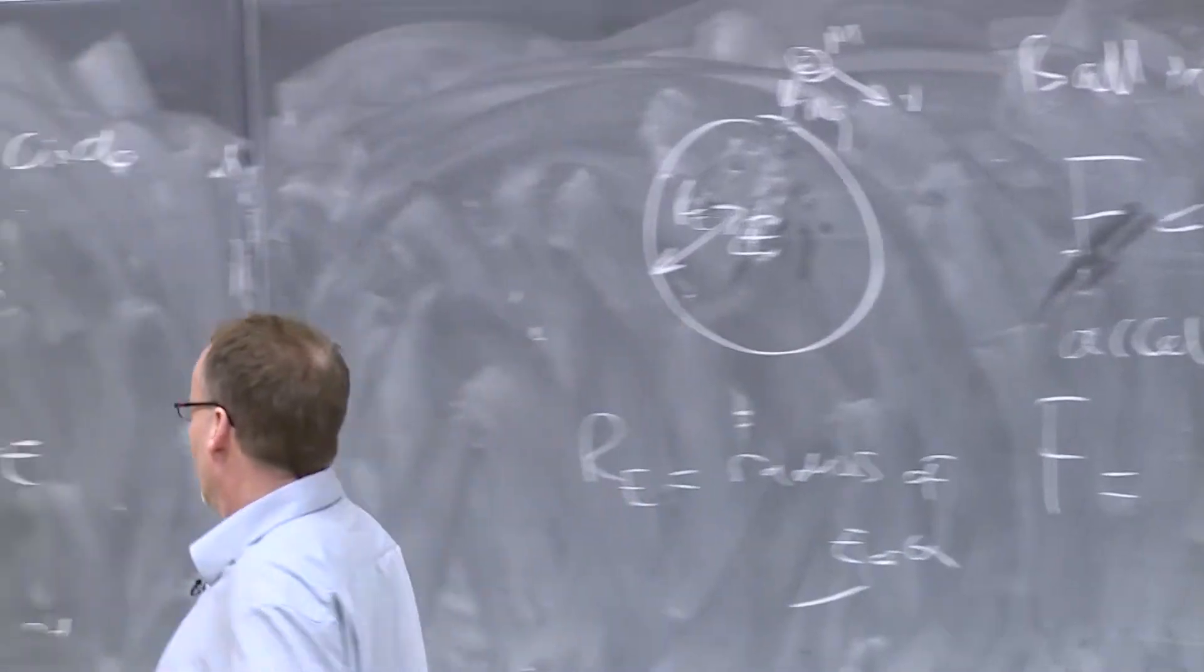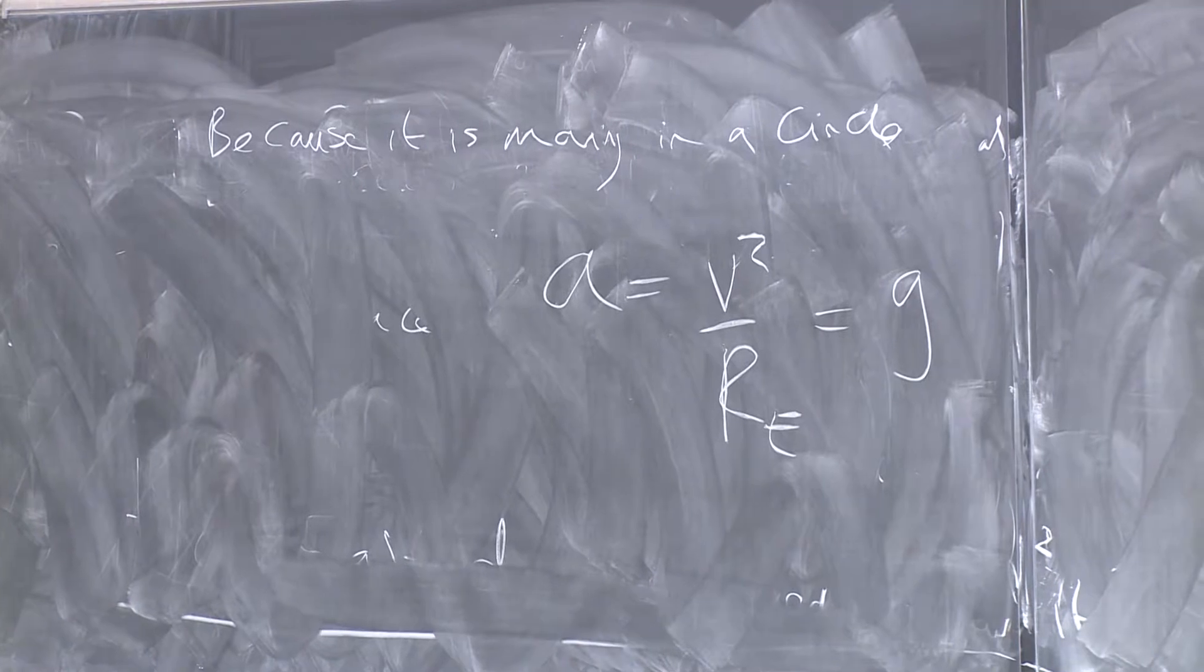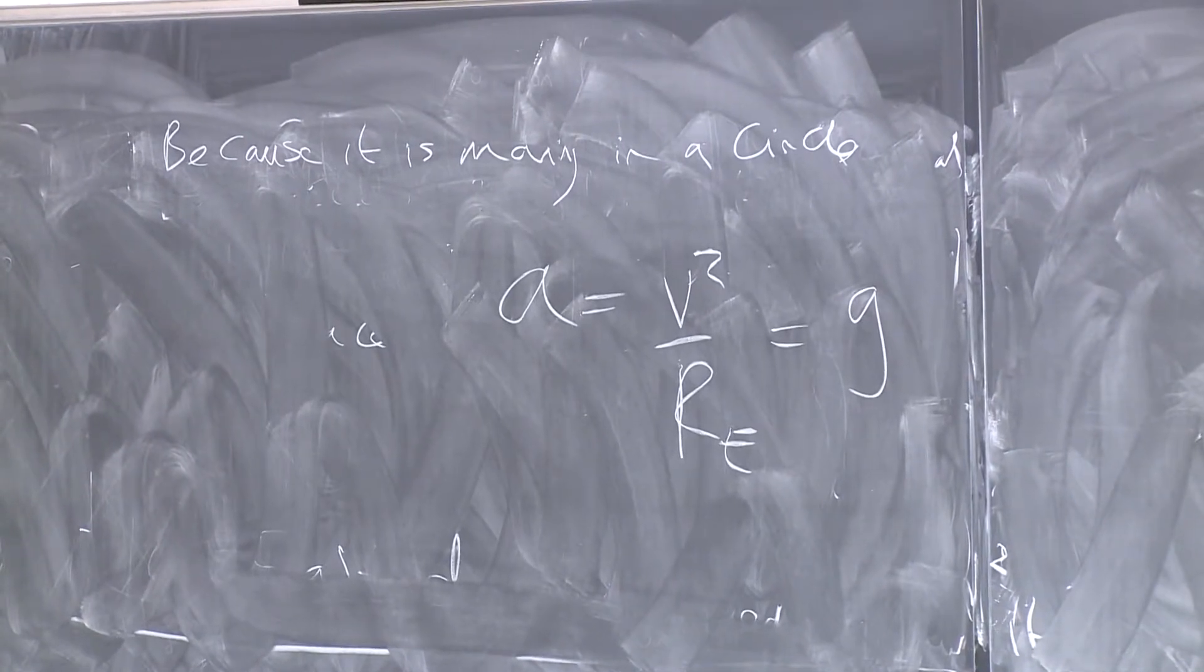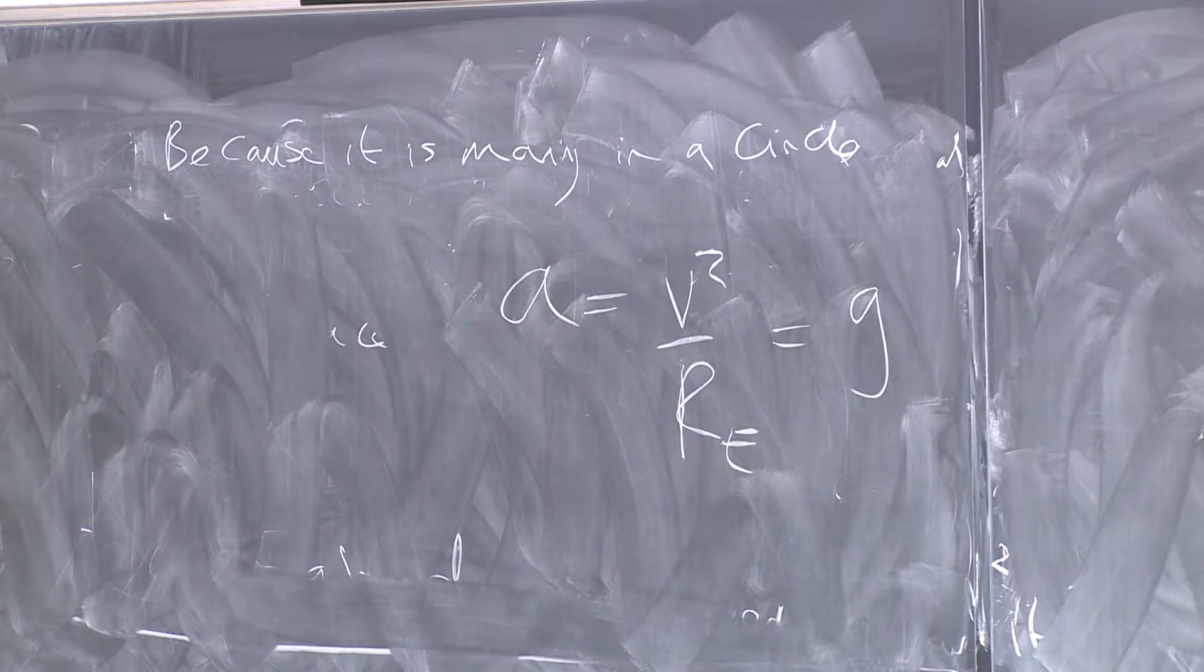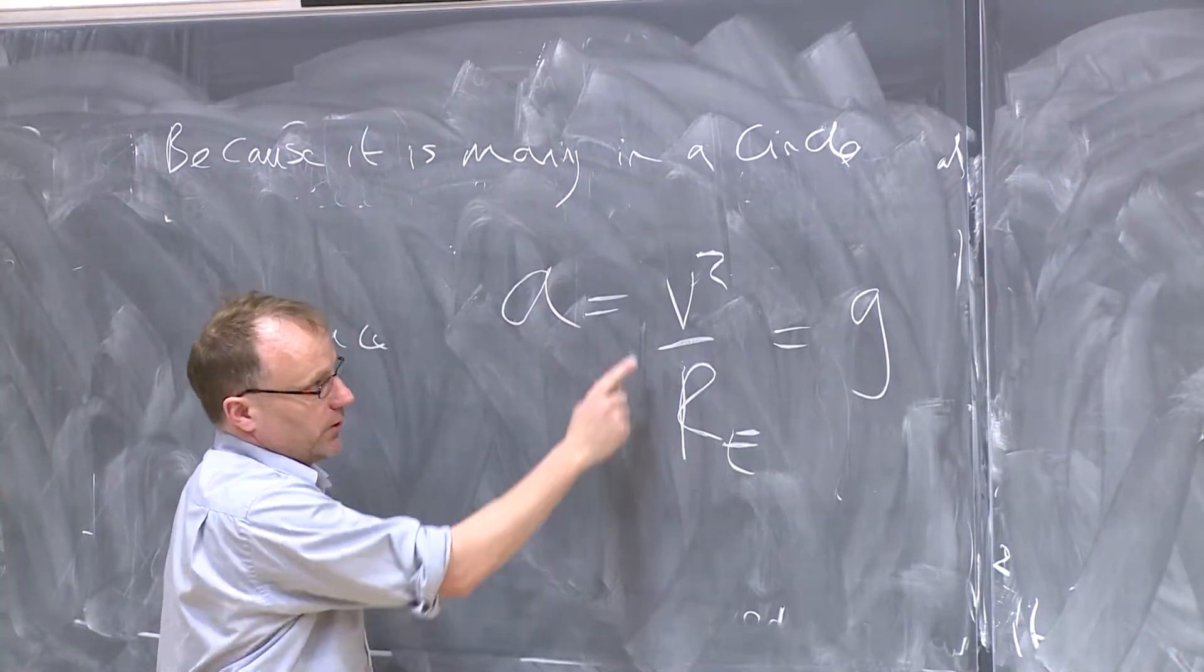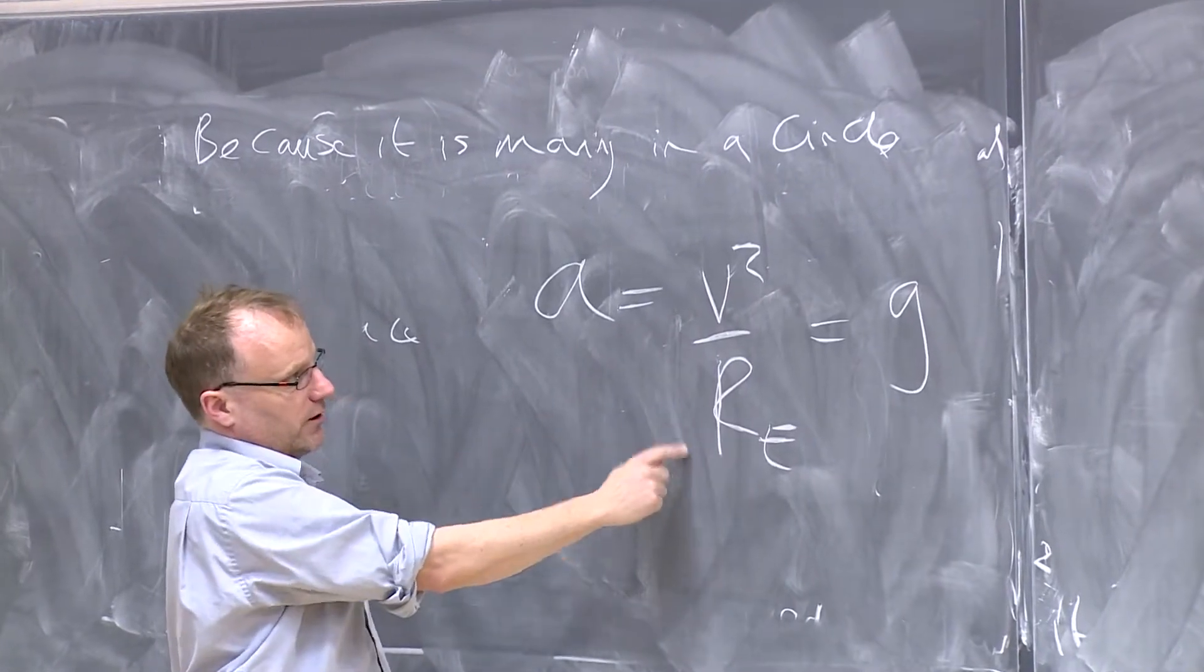So A is V squared over R, but this is also equal to G, because that's how much it's accelerating. Its acceleration is 10 meters per second squared. That's the numerical value. But the type of acceleration is a central, you could call it maybe a centrifugal type of force. It's going in a circle.